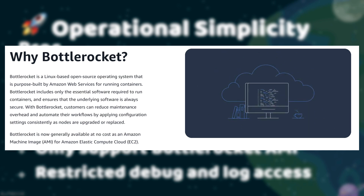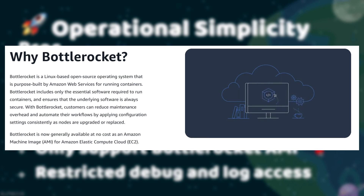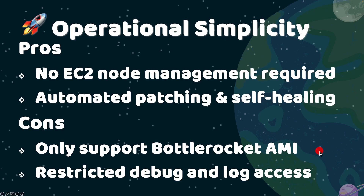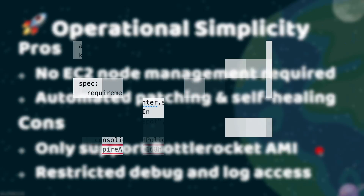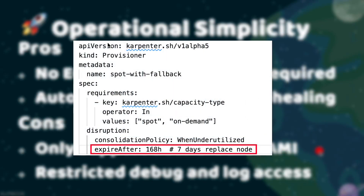Auto Mode also applies patches and replaces unhealthy nodes. This is possible because it uses a special AMI called Bottlerocket. However, keep in mind, you cannot use your own custom AMI with Auto Mode. Also, by default, the nodes only live for 21 days before they are replaced, but you can change this setting if you need to.